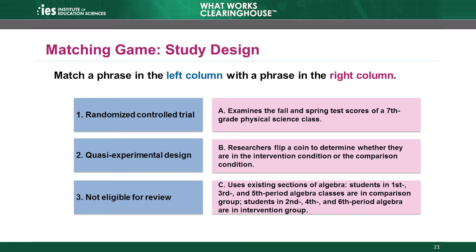The second item in the left column is Quasi-Experimental Design. The answer is C: uses existing sections of algebra. Students in first, third, and fifth period algebra classes are in the comparison group. Students in second, fourth, and sixth period algebra are in the intervention group. There are two distinct groups and the study does not use random assignment, which means this is an eligible Quasi-Experimental Design.